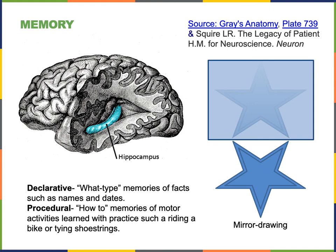Memory is a major function of the limbic system, and there are two distinct types of memory. There are declarative memories, which are "what" memories — the storage of facts like names and dates, as well as information about the spatial environment where an event occurred. The context in which those facts were learned is also part of declarative memory.